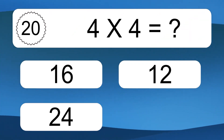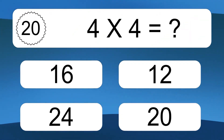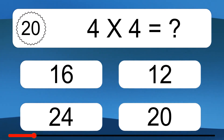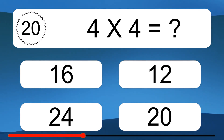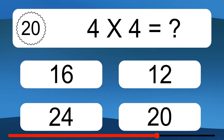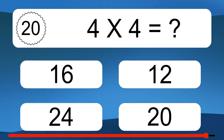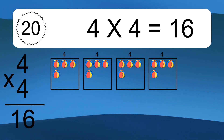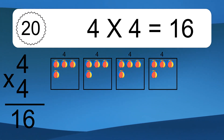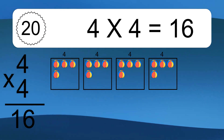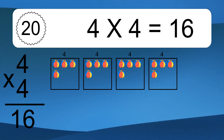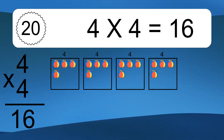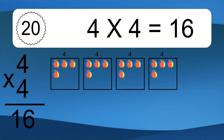4 times 4 equals what? 4 times 4 equals 16. We have 4 boxes, and each box has 4 colorful balls inside. If you count all the balls in all the boxes together, you will have 4 times 4 balls. This equals 16 balls.